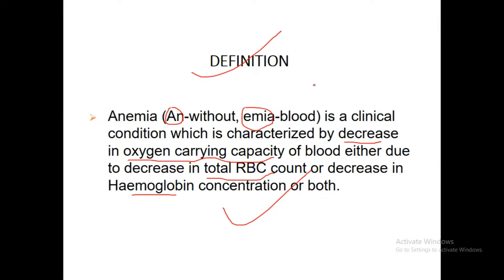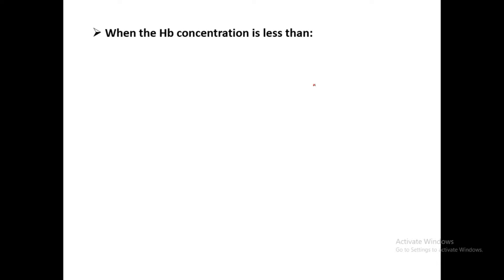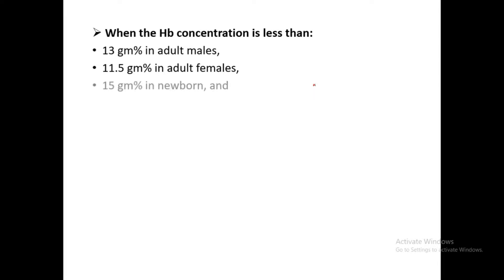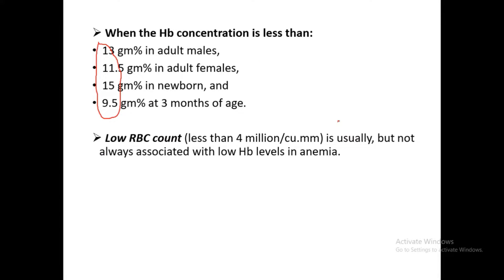The definition of anemia is important for theory and practical exams. Anemia is diagnosed when hemoglobin concentration is less than 13 g% in adult males, 11.5 g% in adult females, 15 g% in newborns, and 9.5 g% at 3 months of age. A low RBC count — less than 4 million per cubic mm — is usually, but not always, associated with low hemoglobin level in anemia.